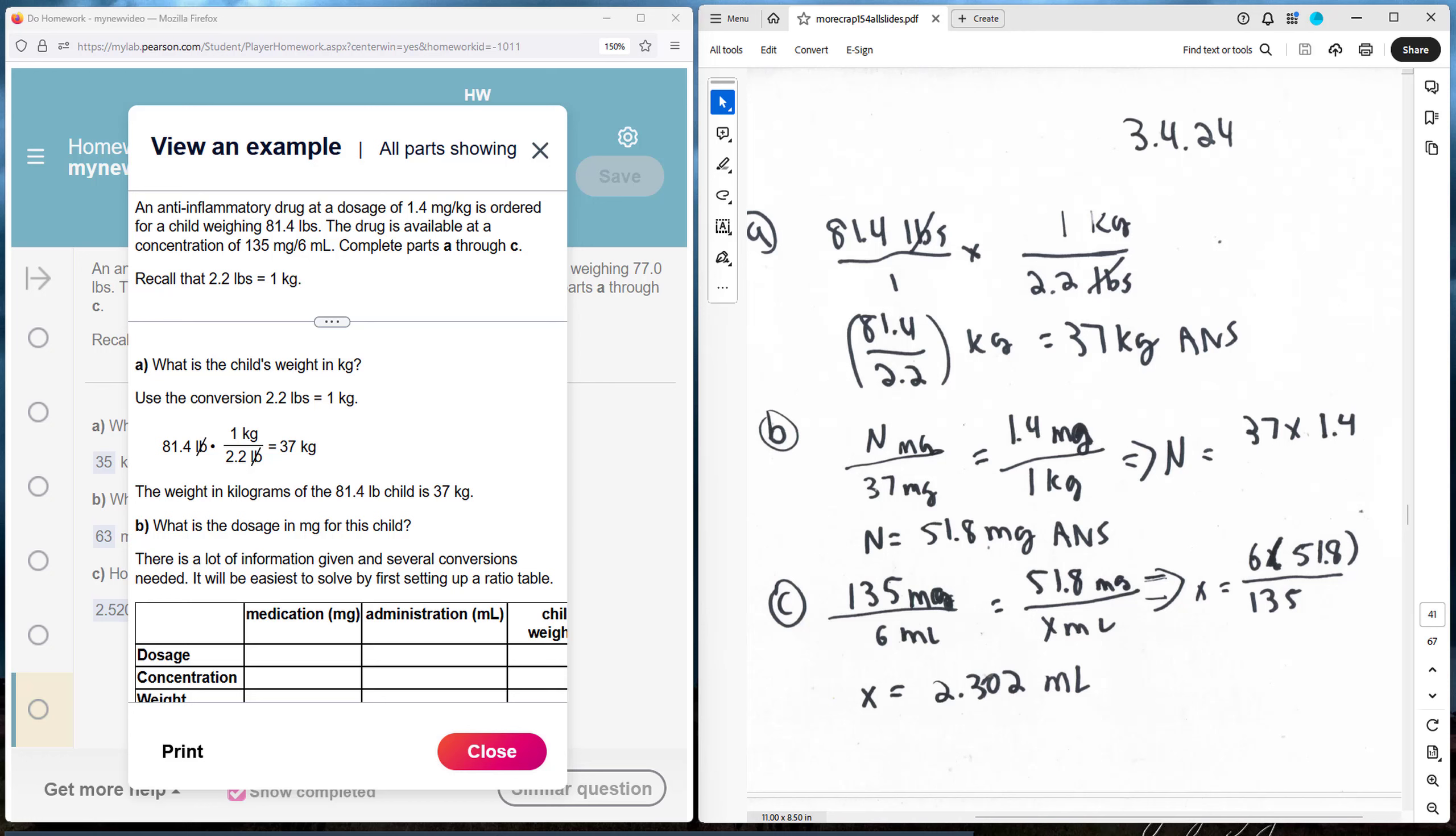So to do the conversion, conversion comes at the expense of cancellation. I want pounds to cancel out, so I create a cancellation there. And I want to replace it with kilograms. The relationship between pounds and kilograms is 1 kg is 2.2 pounds. So when I multiply, pounds cancel out. And I have 81.4 divided by 2.2 kg, which is 37 kg for Part A.